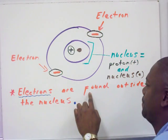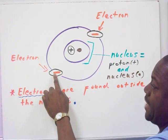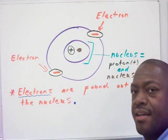Electrons are found outside the nucleus. We have an electron here and also here. These are denoted by negative signs because they have a negative charge.